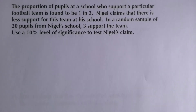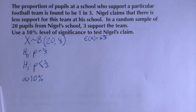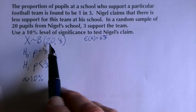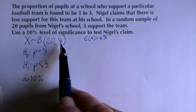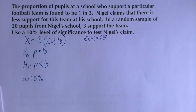Here's a similar example but looking at the other end of the tail. Pause the video and have a go. The setup: binomial distribution, 20 trials, probability one-third. The null hypothesis is that one in three people support this particular team. Nigel thinks it's less popular at his school, so that's the alternate hypothesis.